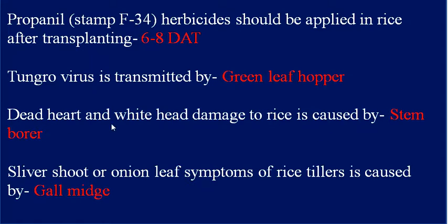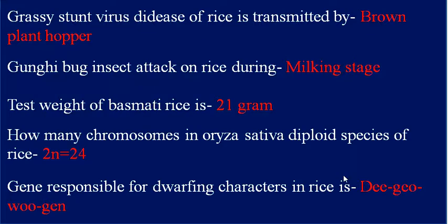Silver shoot or onion leaf symptoms of rice tillers is caused by gall midge. Grassy stunt virus disease of rice is transmitted by the brown plant hopper. Gandhi bug insect attacks rice during the milking stage.